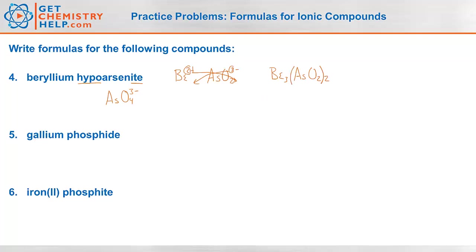How about gallium phosphide? Gallium is Ga, and if you look on your periodic table, it's in our little magic triangle, so it's one of the three that's always 3 positive. Phosphide: -ide normally means it's just from a non-metal, so phosphide came from phosphorus. Phosphorus is 3 away from the noble gases, so it's 3 negative. A 3 positive and a 3 negative cancel out, and we get GaP.